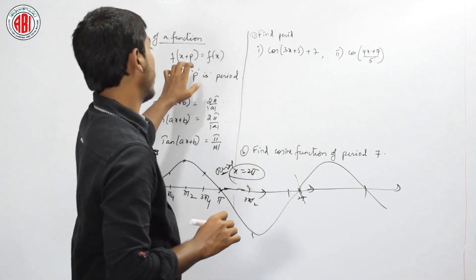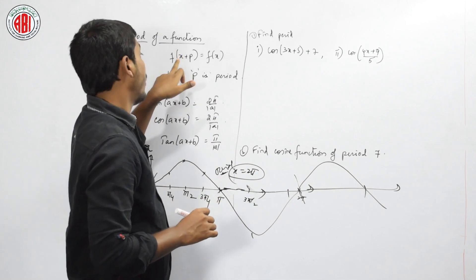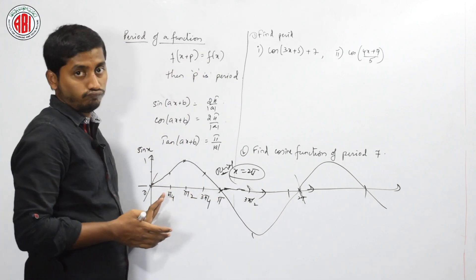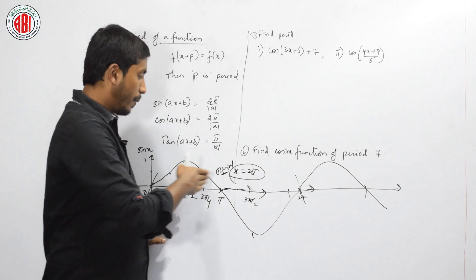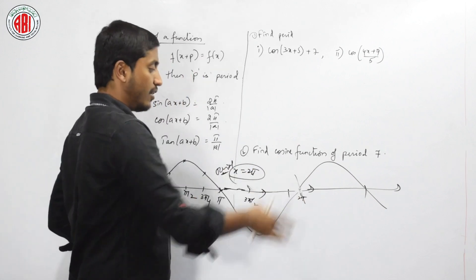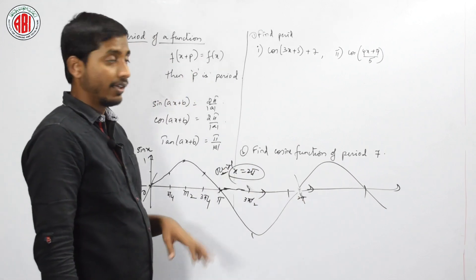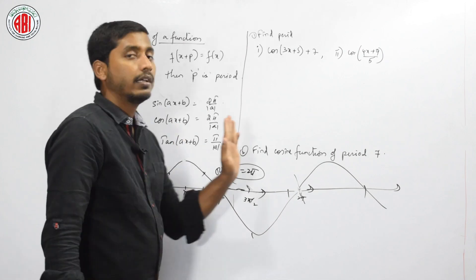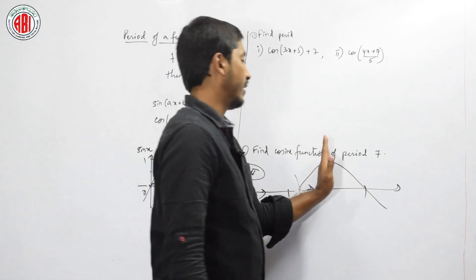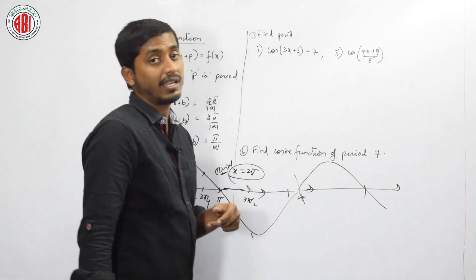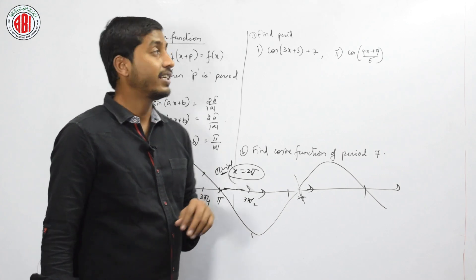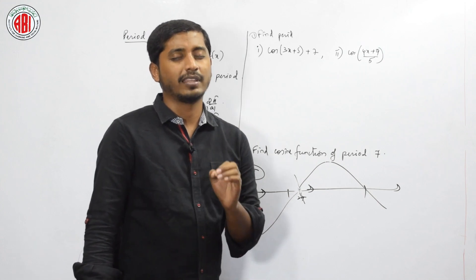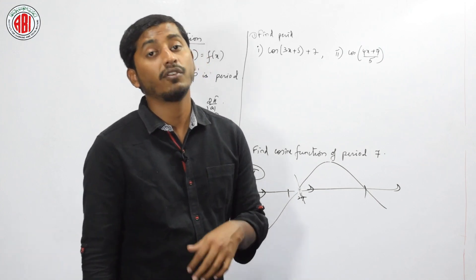Theoretically, you can see this definition: if f(x + p) = f(x). Let us assume x is 0 — after 2pi, does it have the same value 0? Yes. Let us assume pi by 2 — after 2pi, does it have the same value? Yes, it has the same value. Which means sin is repeating after 2pi radians. Therefore, sin x has a period of 2pi.